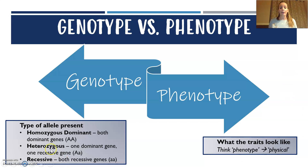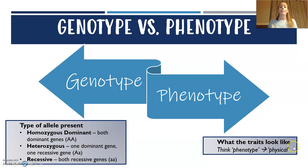Phenotype is the physical expression — what the trait looks like or how it presents itself. So capital A capital A, or capital A lowercase a, would both be purple flowers, and then two lowercase a's would be white flowers.